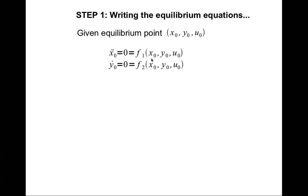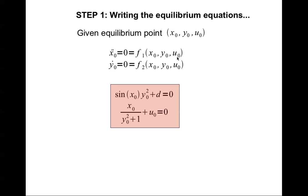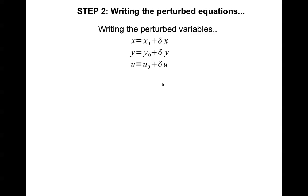We write: x-naught double-dot equals zero and y-naught dot equals zero at the equilibrium point x-naught, y-naught, u-naught. In general you can have an infinite number of equilibrium points, also called operating points. If you substitute x-naught, y-naught, and u-naught into the original dynamic equations and set them to zero, these are the equilibrium equations. The second step is to write the perturbed equations.